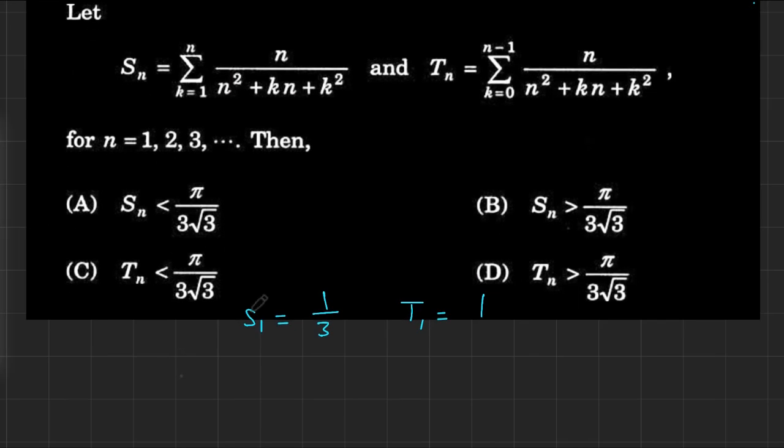Now, for just curiosity's sake, let's try to play around with the Riemann sum idea that we had. First off, let's try to factor off n² from the bottom. So we'd have S of n equals the sum from k equals 1 to n of 1 over n times 1 over 1 plus k over n plus (k over n) whole squared.